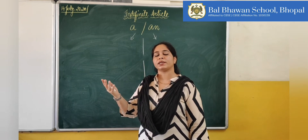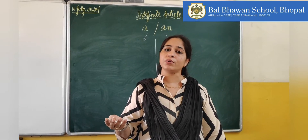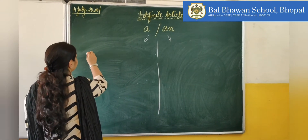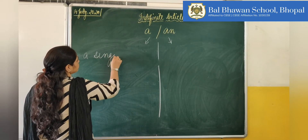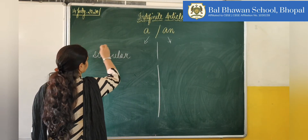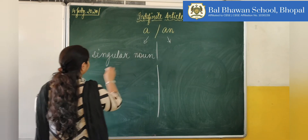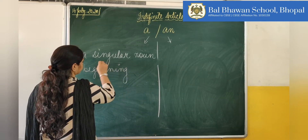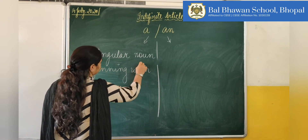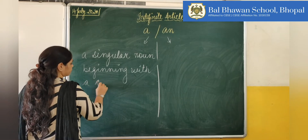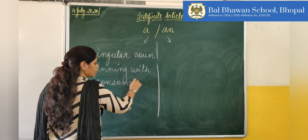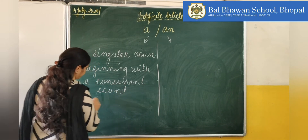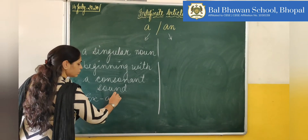The simplest way I can explain where and how you can use 'a' and 'an' is: 'a' is used before a singular noun beginning with a consonant sound. For example, a bench.